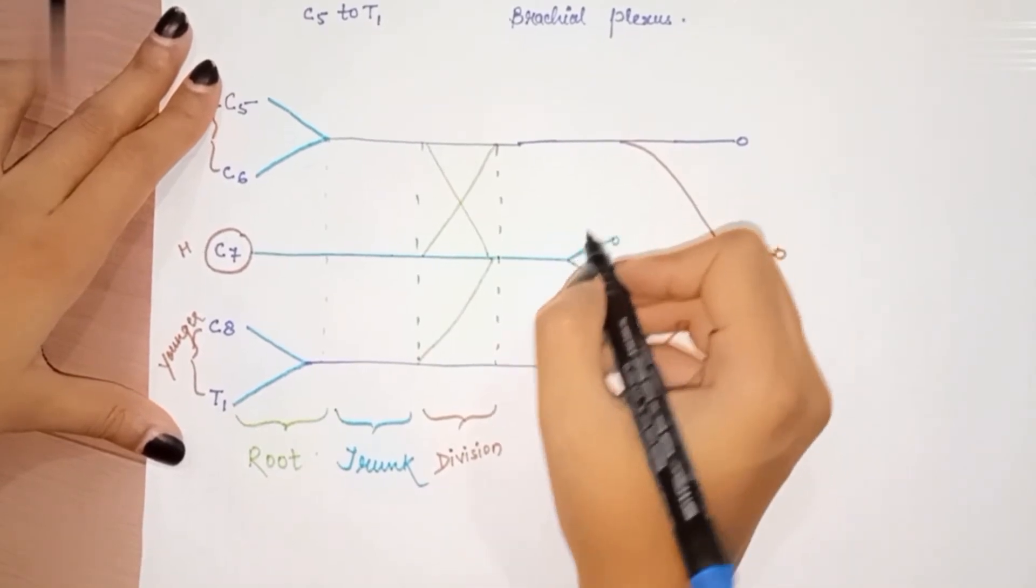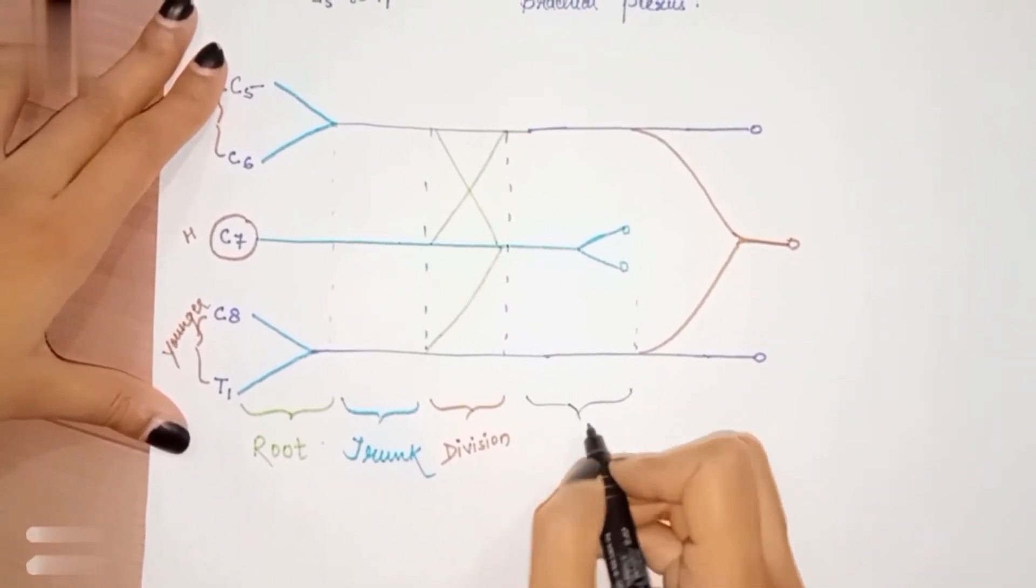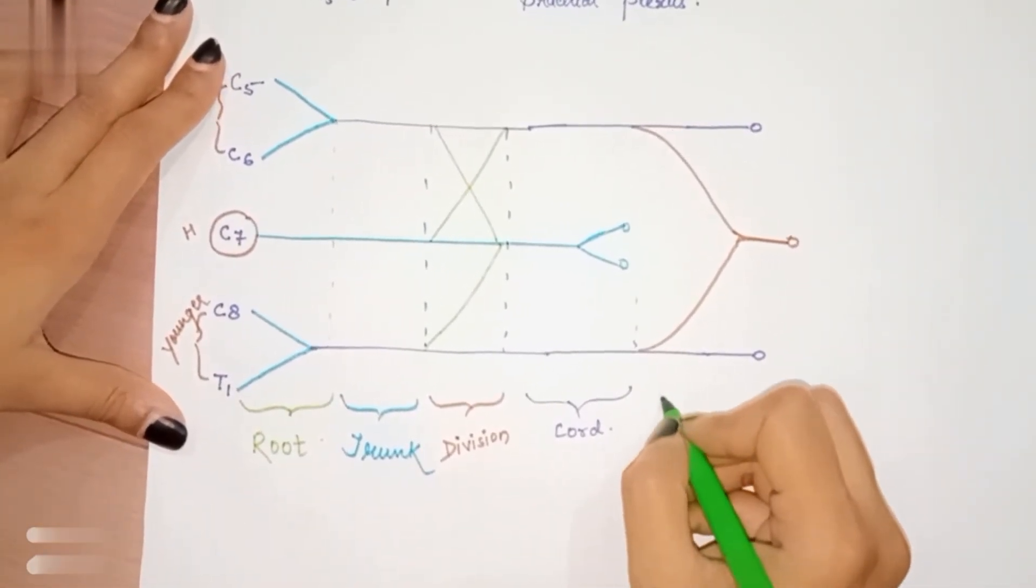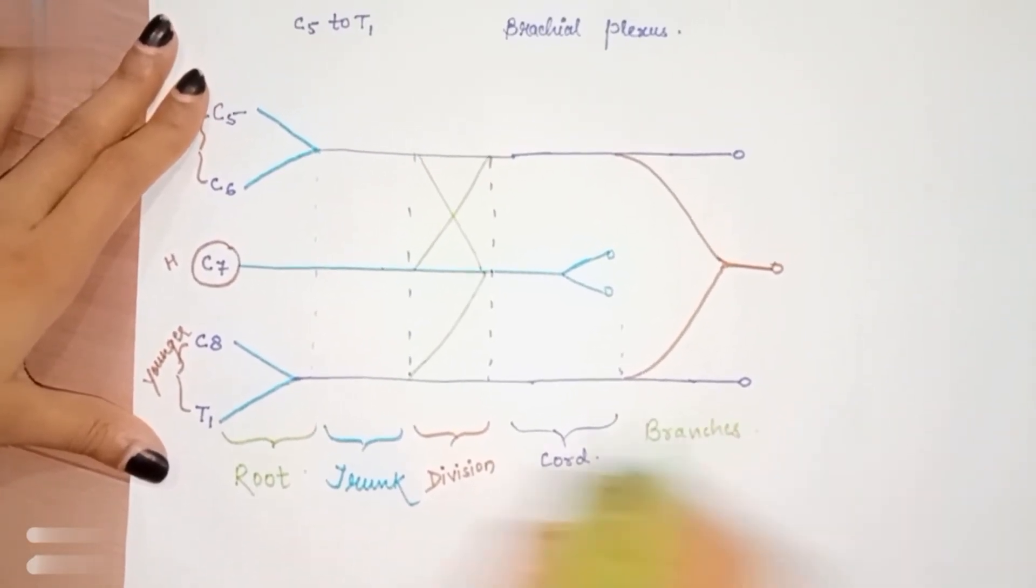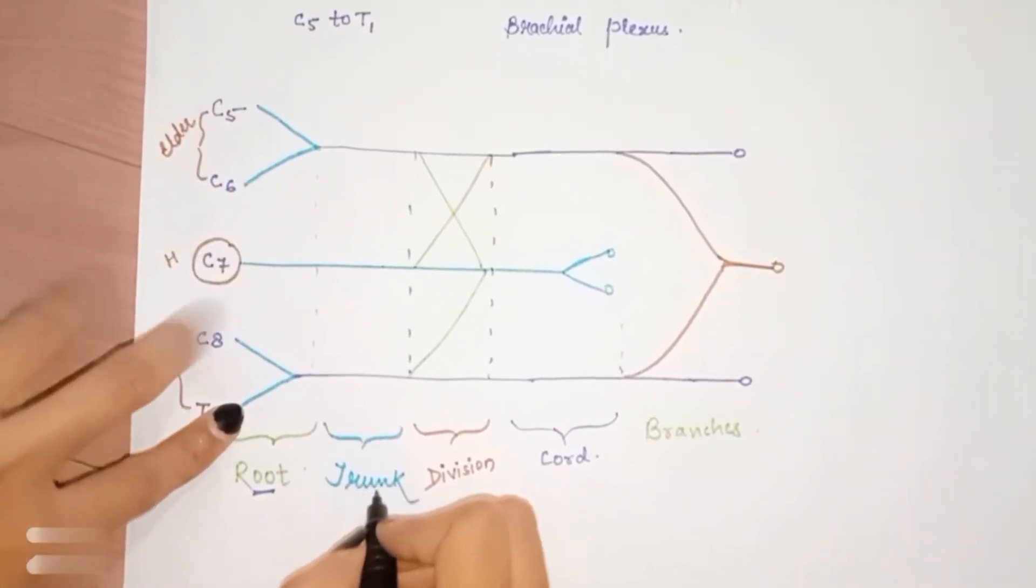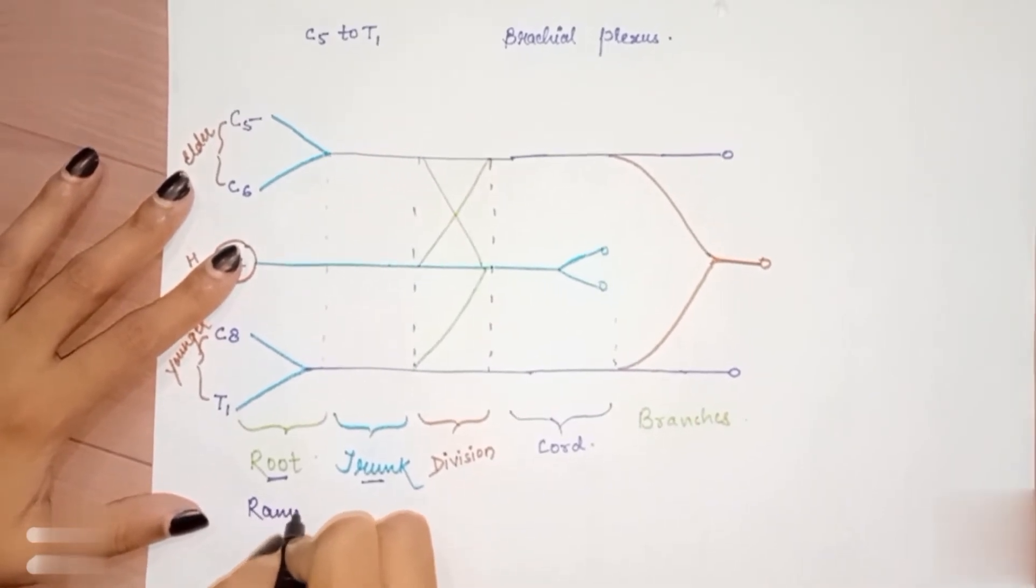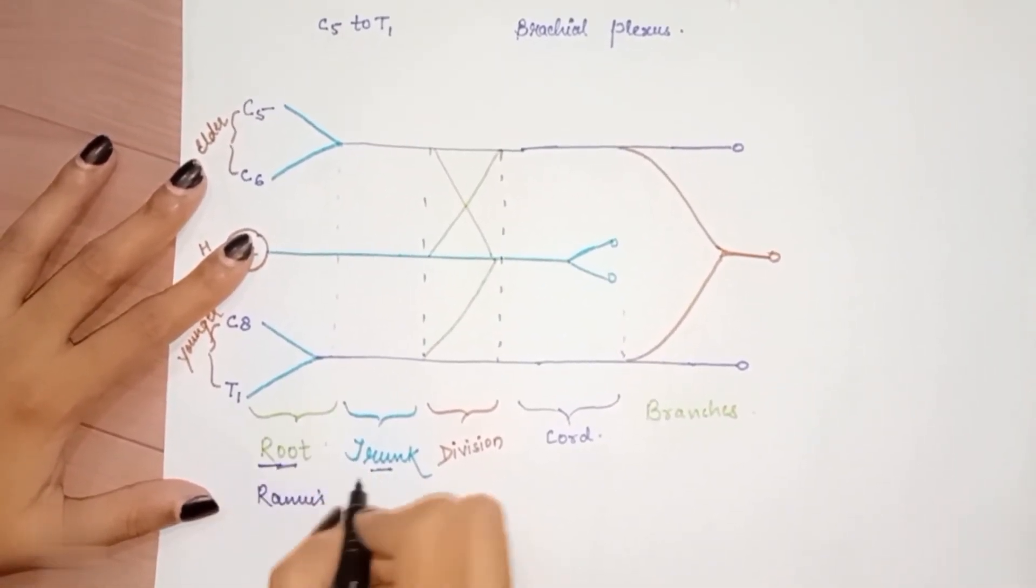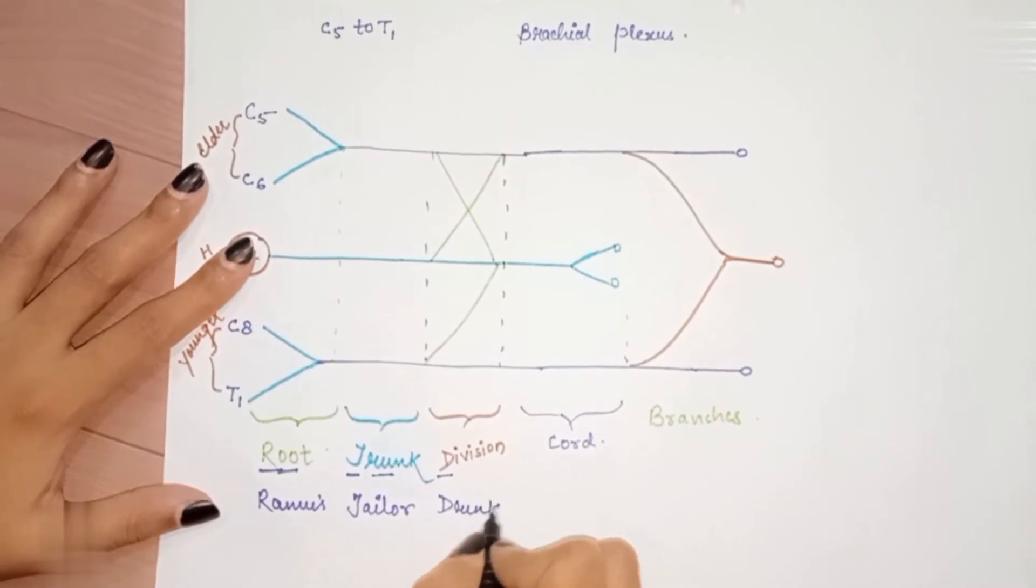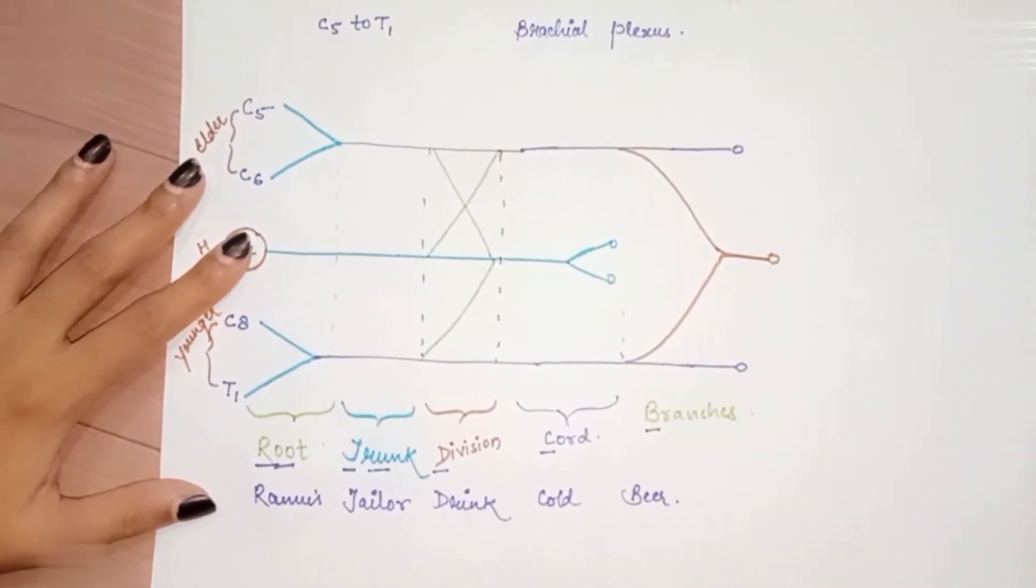Note that everything except the feet is the cord. All the points you see are the branches. Now how to learn root, trunk, division, cord, and branches? There's a mnemonic: Ramus Tailor Drink Cold Bear. R is root, T is trunk, D is division, C is cord, and B is branches.